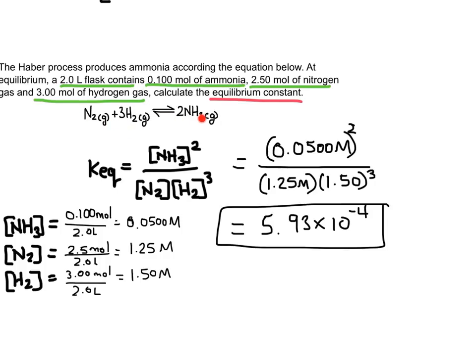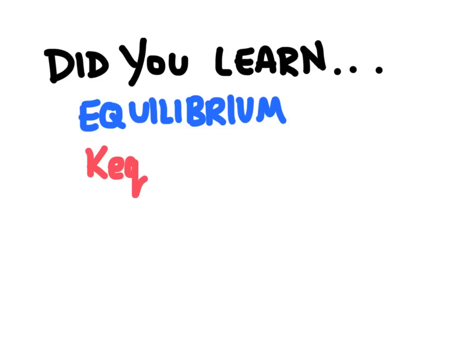The last thing to remember is that the equilibrium constant is temperature dependent. If we wanted to change K_eq and make it bigger than 1 to actually produce ammonia, we would need to change the temperature. For the Haber process, it turns out we want to do that at low temperatures. To recap: equilibrium is when the rate of the forward reaction equals the rate of the reverse reaction; K_eq greater than 1 is product favored; K_eq less than 1 is reactant favored; and the equilibrium constant is dependent on temperature — change the temperature and you change K_eq.